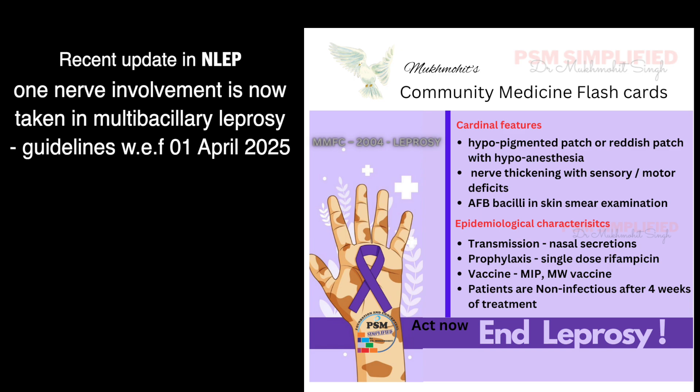The cardinal features of leprosy — we all remember — are three features: hypopigmented patches or reddish patches with hypoanesthesia, which is more important. Next is nerve thickening with sensory-motor deficits, or we can have acid-fast bacilli (AFB) in skin slit smear examination. A very common doubt among students: do we need all three, or any two? Please remember, we need any one out of three to diagnose leprosy.